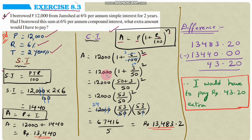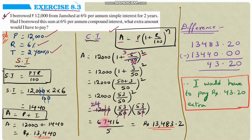Simplifying: 6/100 reduces to 3/50. So A = 12,000 × (1 + 3/50) squared. LCM gives (50 + 3)/50 = 53/50. So A = 12,000 × (53/50) × (53/50). After cancelling zeros and the 5s, we get 24 × 53 × 53 divided by 5, which gives 67,416 divided by 5 = rupees 13,483.2.